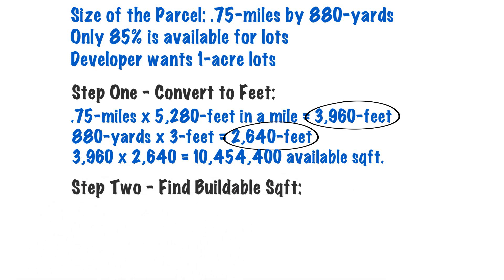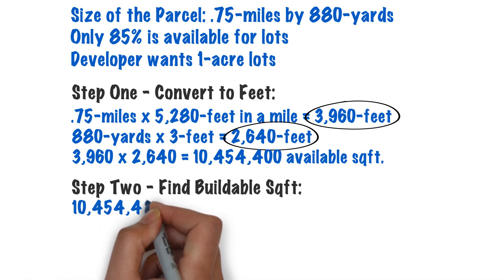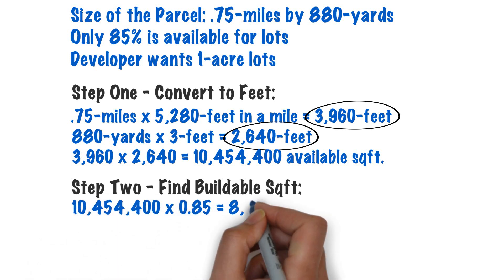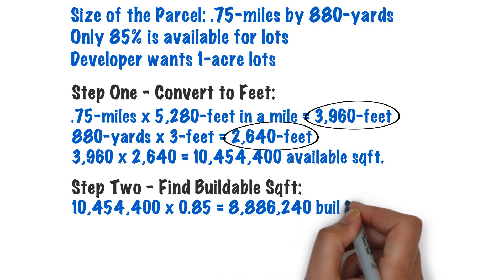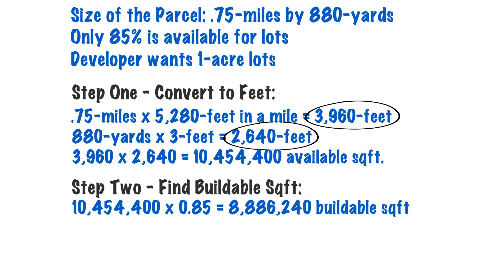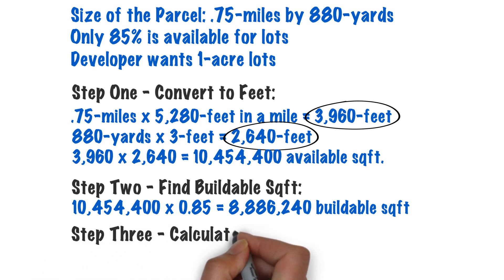Now, knowing that we only have 85 percent available for building lots, we take that number — 10,454,400 square feet — and multiply it by 0.85 to give us 8,886,240 buildable square feet.